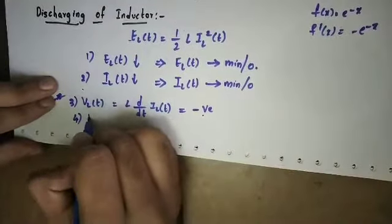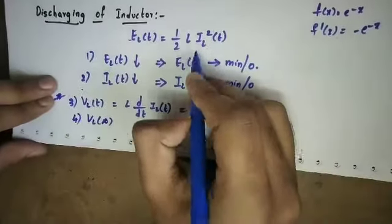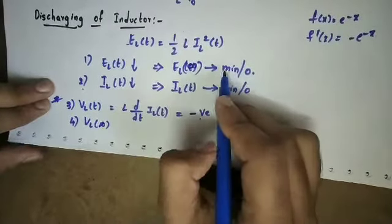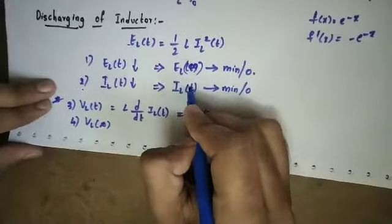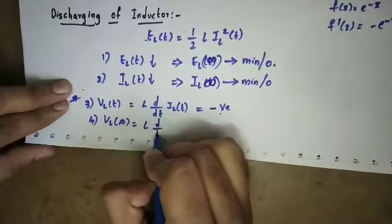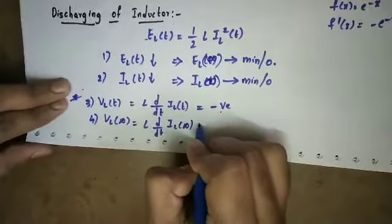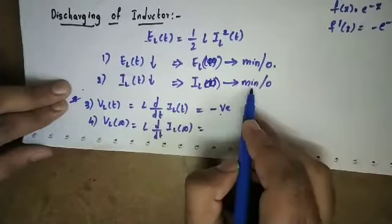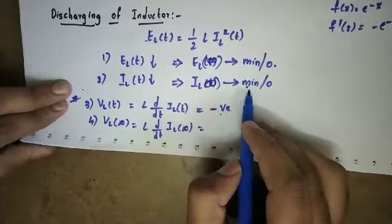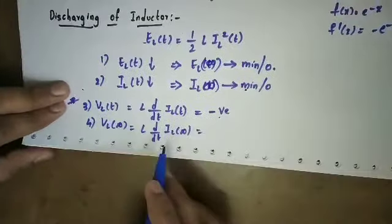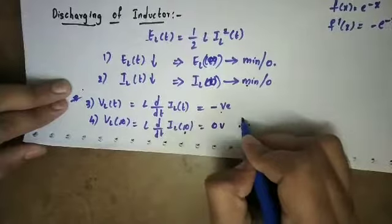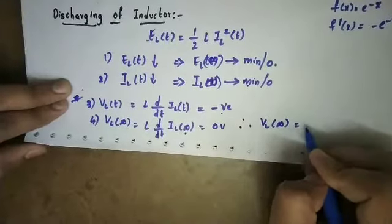The fourth point is VL of infinity. We make the current decrease to infinity. At infinity, the current is constant — it depends on standard discharging or normal discharging. The constant value at infinity: derivative of a constant is 0. So L into 0 is 0. Therefore, VL of infinity is equal to 0 volts. This is also important.